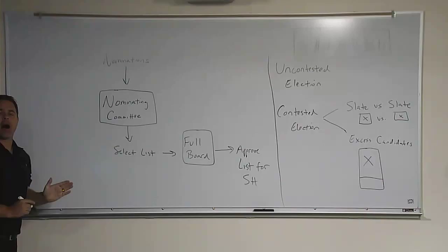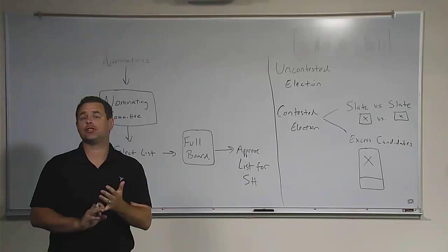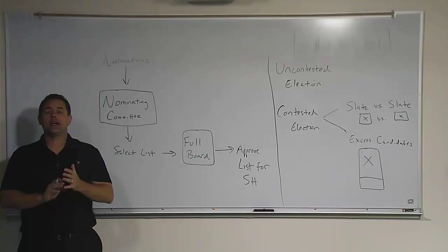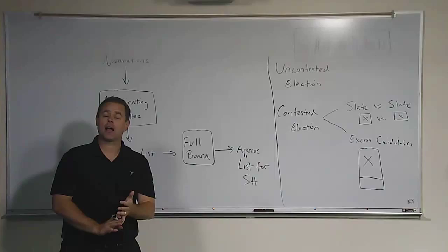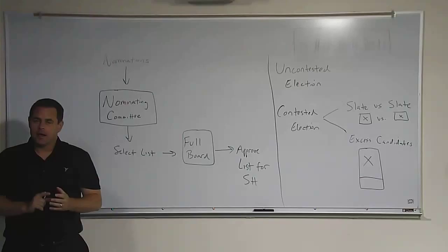We get nominations into the nominating committee. Who makes these nominations? It could be shareholders who own a certain minimum threshold of stock. $2,000 worth of stock is very common, so I'll just say that from now on. So if you own $2,000 worth of stock, you can nominate people for the board of directors.